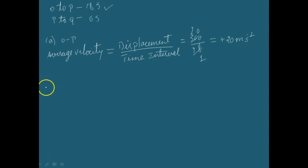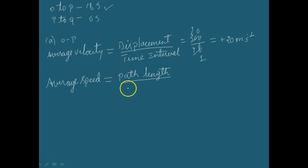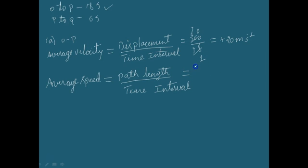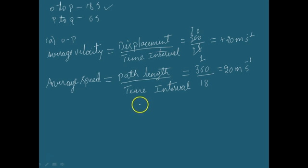Now, what about average speed? Average speed is given by path length divided by time interval. In this case, the path length from O to P is 360 meters and the time interval is 18 seconds. So the average speed is again 20 meters per second. Thus, in this case, the average speed is equal to the magnitude of average velocity.